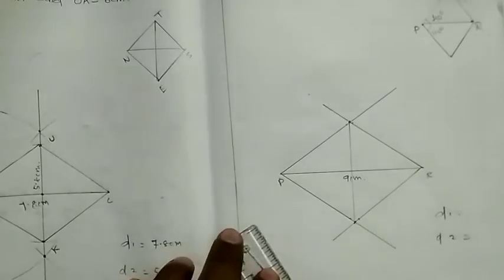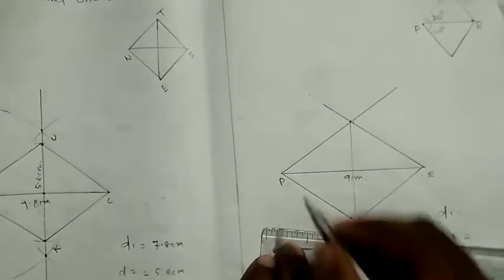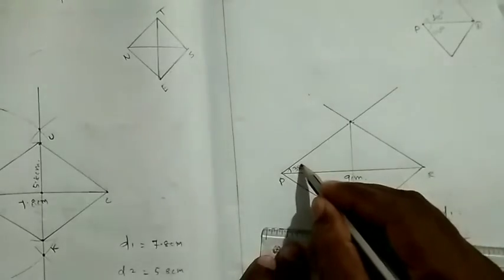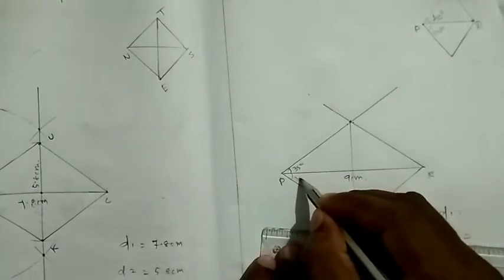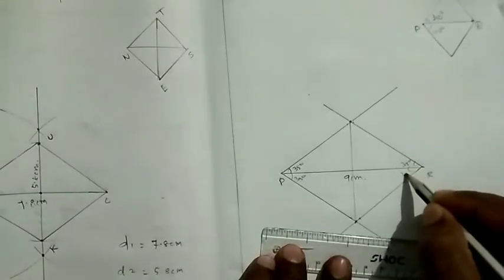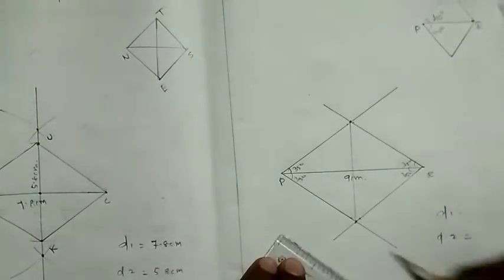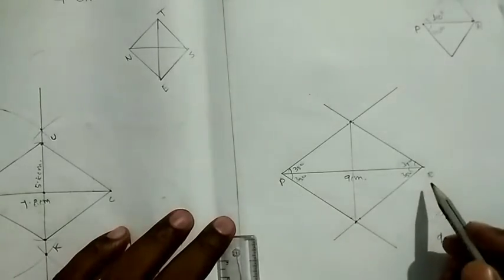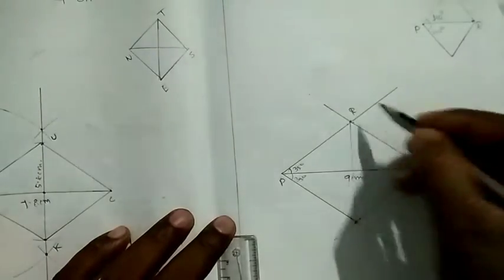Now, D1 is measured. Now, the angle is 35. So, 35 degrees. So, this side is 35. This side is 35. So, point name is P, R, PR.